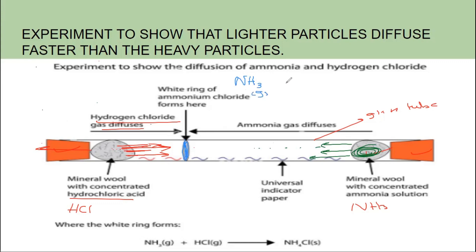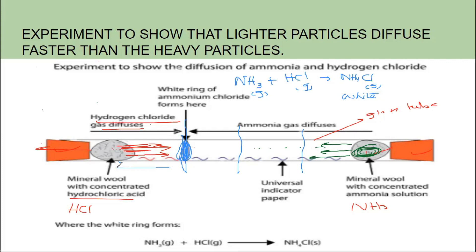When the ammonia gas (NH3) meets the hydrogen chloride gas (HCl), they react chemically and form a new compound: ammonium chloride (NH4Cl), which is a white colored solid. This white solid sticks inside the glass tube forming a white ring. Crucially, the ring forms not in the middle and not near ammonia, but near the HCl side. This proves that HCl gas molecules are heavier so they diffuse slowly and travel a shorter distance, while ammonia gas molecules are very light so they diffuse faster and cover a greater distance.